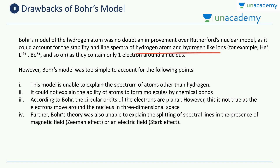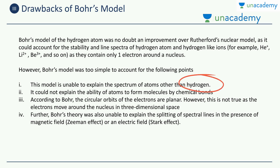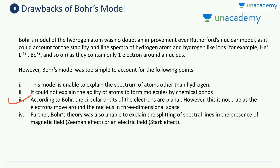The first drawback is that the model is unable to explain the spectrum of atoms other than hydrogen and hydrogen-like ions. If the atom becomes more complex, a different model is required. The second drawback is that it could not explain the ability of atoms to form molecules by chemical bonds — the formation of chemical bonds could not be fully explained by Bohr's model. Thirdly, Bohr's model assumes the circular orbits of electrons are planar, lying in a 2D plane.